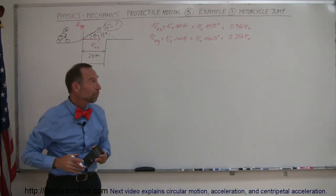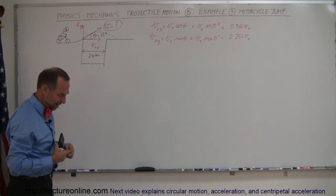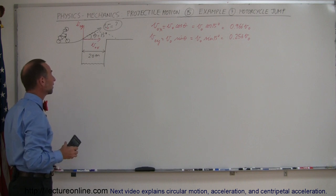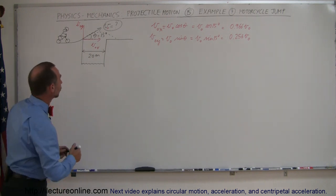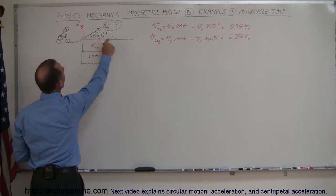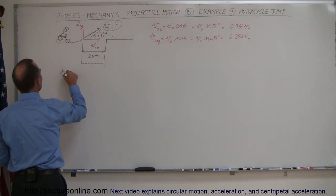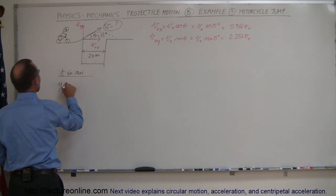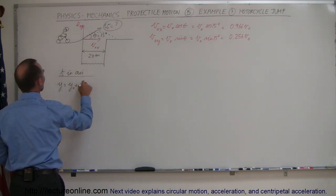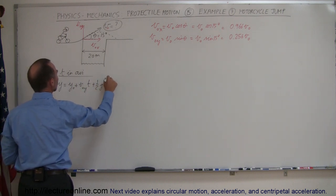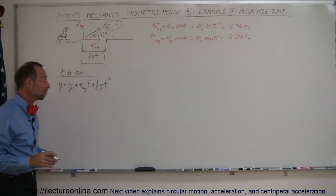All right so now we have our x and y components of our initial velocity and by now you should guess that the next step would be to find the time in the air. Assuming that the takeoff point and the landing point are at the same height let's just use that for simplicity. We can say that the time in the air can be found by using the equation y equals y sub-naught plus v sub-naught in the y direction times time plus one-half g t squared. That should be a very familiar equation by now.